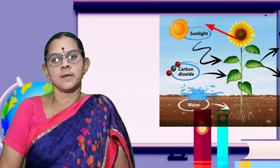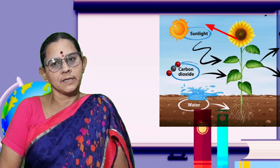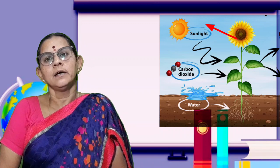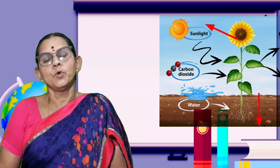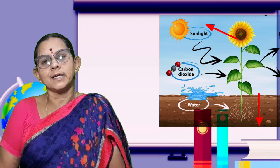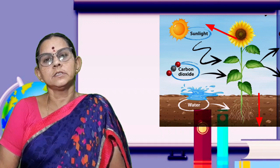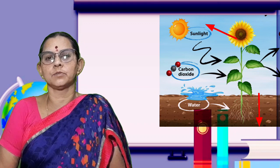The shoot system shows positive phototropism and positive geotropism — that is, roots grow towards gravity.